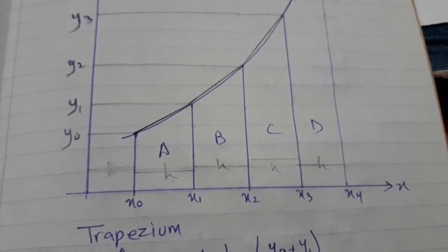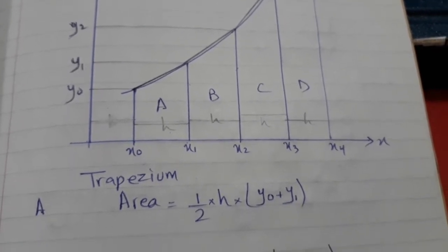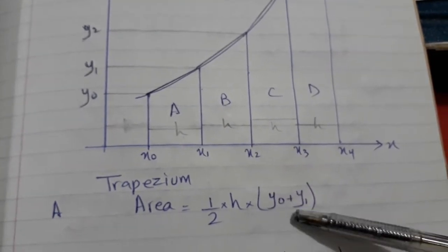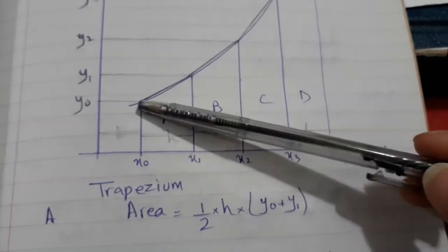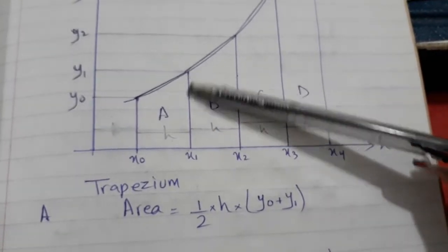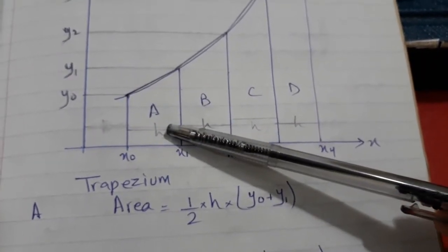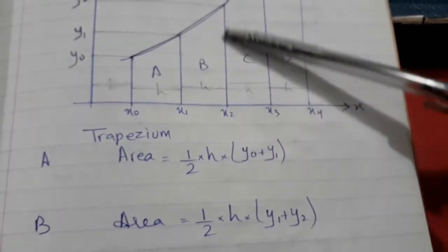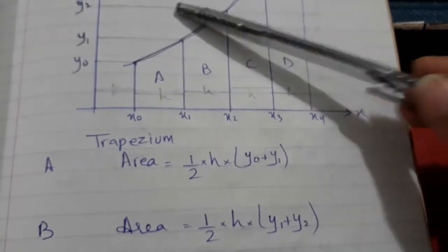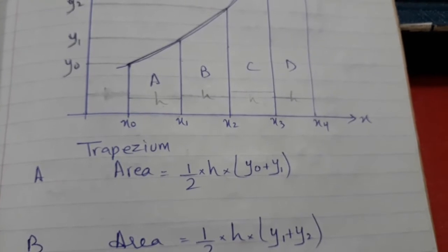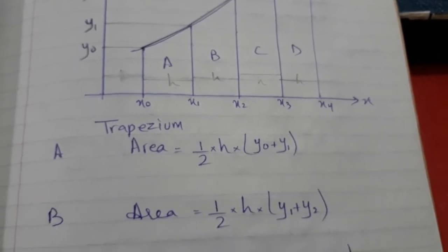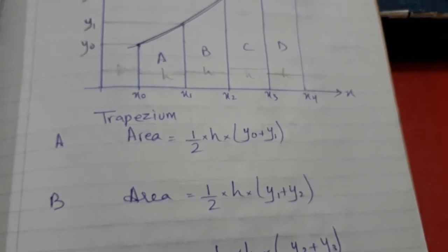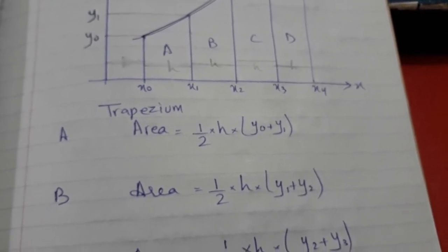Now we will see how to find the areas of the trapeziums. The area of trapezium A will be half times the width multiplied by the sum of the two side lengths, where each side length equals the y-value at that boundary. Similarly for trapezium B I use the y-values at its boundaries — these are the ordinates which I will find from the function. I am generalizing the formula because if you understand this derivation, you will not need to memorize it.